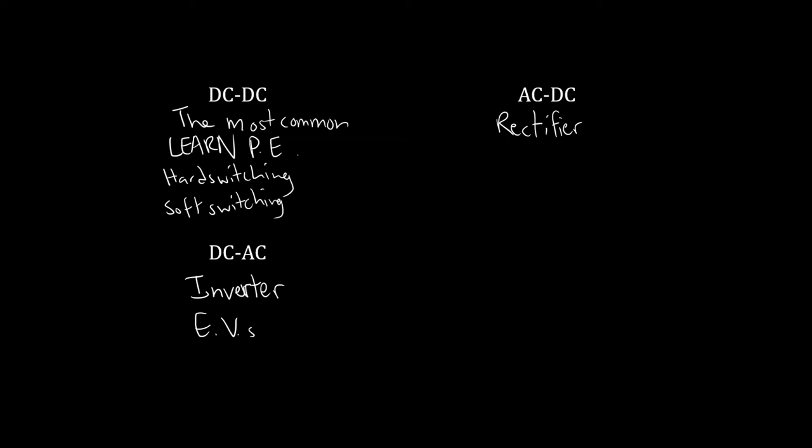Finally, there are AC-to-AC converters — you have one AC voltage and maybe want to produce a different AC voltage with a different amplitude or frequency. These are the least common. An example would be linking two different power grids that operate at different specifications. You'd need an AC-to-AC converter to link those grids. There are ways of getting around it, like high-voltage DC links, but maybe we'll get there much later on.